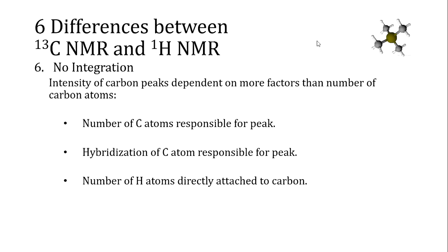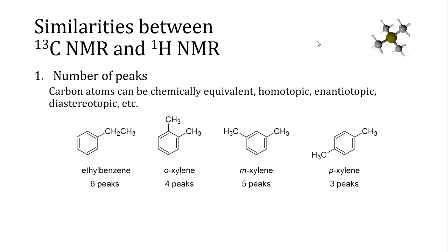That last effect can be useful if used deliberately, but that's a topic for an advanced course in NMR spectroscopy. Some things, however, are reliably similar between the two types of NMR spectroscopy. The number of peaks is pretty reliably related to the structure of a molecule. You can predict the number of different types of carbon atoms that would generate peaks based on the symmetry of a molecule.